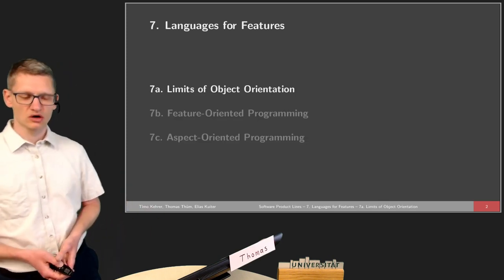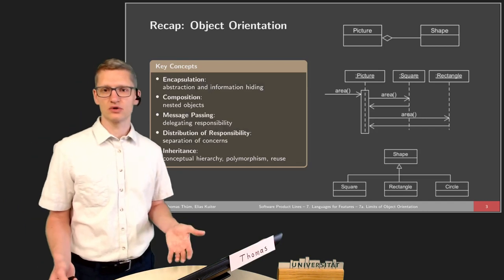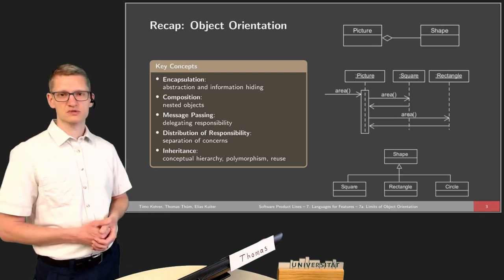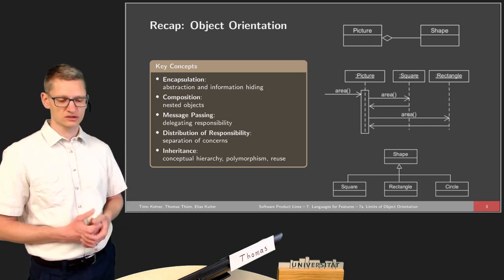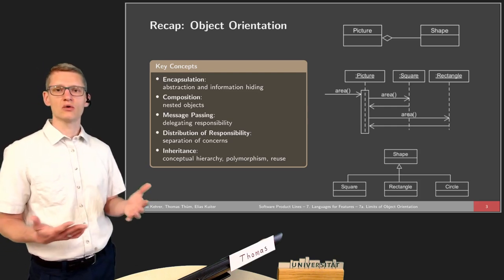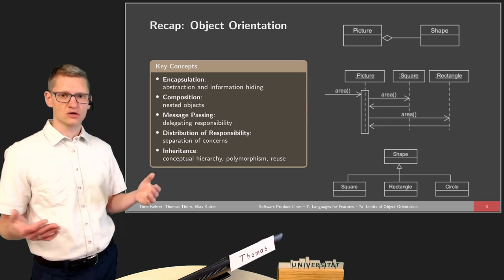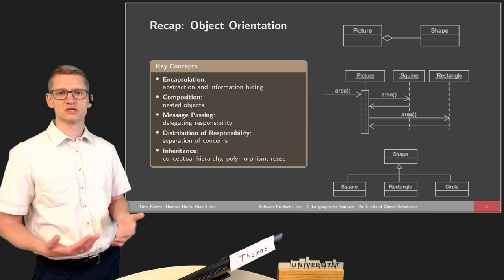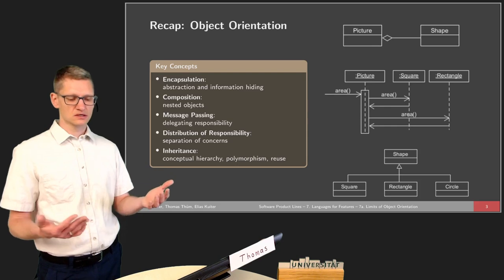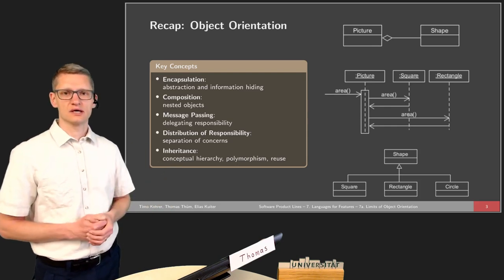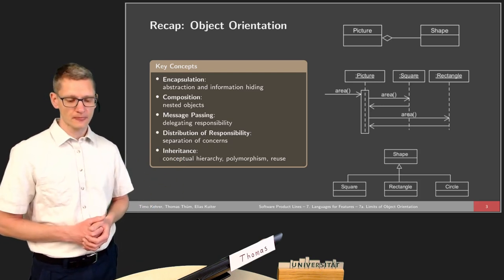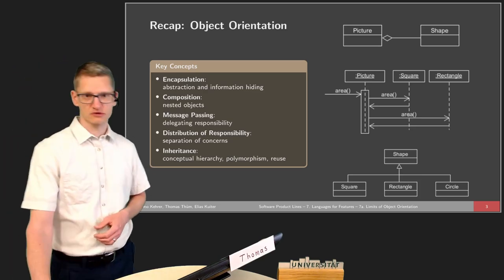First, let's look at the limits of object orientation. We already talked about object orientation in the second lecture — key concepts like encapsulation, composition, message passing, distribution of responsibility, and inheritance. These concepts together allow us to model a system in terms of its objects, and these objects communicate with each other. In this lecture we will also see when this message passing among objects is not even enough in terms of modularization.